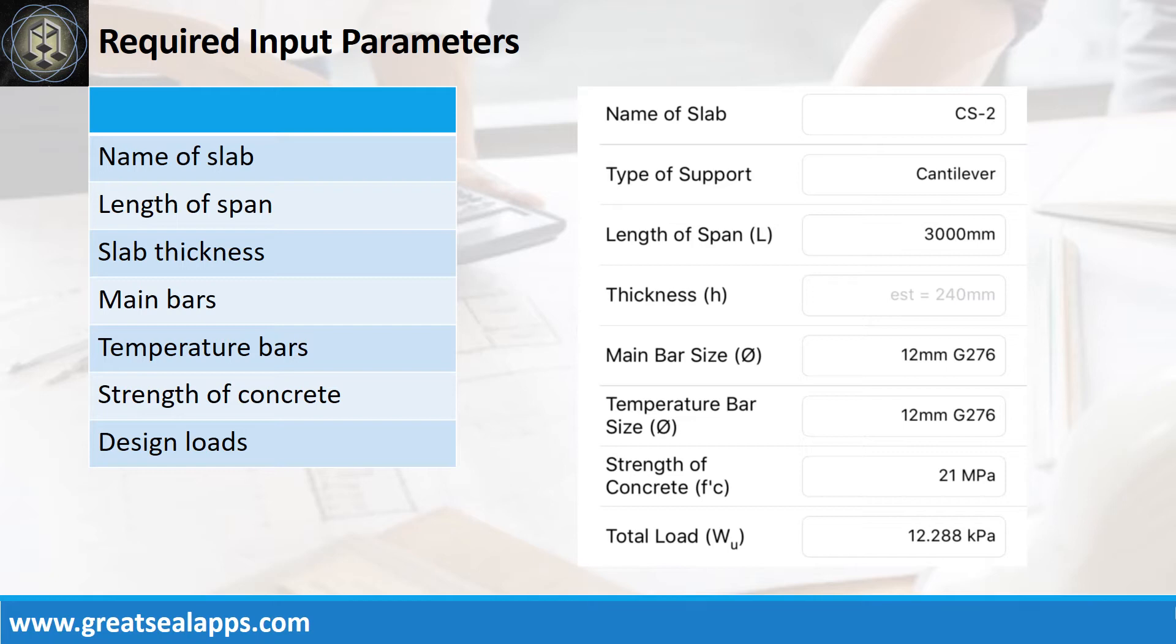Main bars and temperature bars: 12 mm bar at grade 276. Strength of concrete: 21 MPa. And factored load: 12.288 kPa.